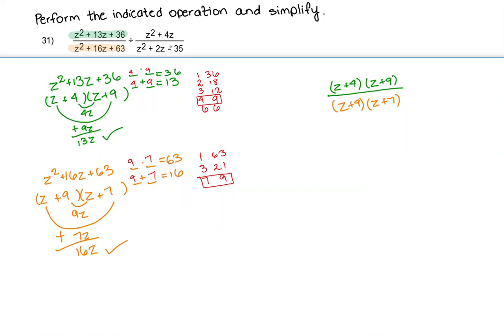Let's do the numerator of the second fraction. We have z squared plus 4z. When you're factoring binomials, you're just taking out a GCF. Here the GCF is just z, because that's the greatest common factor I can take out, and I'm left with z(z + 4).